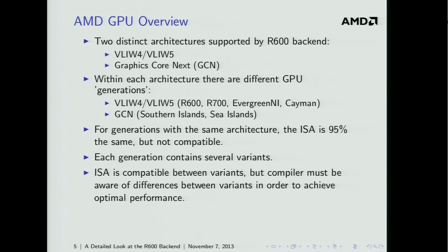There are two different architectures supported by the R600 backend. The first is our older VLIW architecture, and the more recent one is Graphics Core Next (GCN) for Southern Islands GPUs and newer. Within each architecture there are different GPU generations: for VLIW there are four — R600, R700, Evergreen/Northern Islands, and Cayman; for GCN there are two — Southern Islands and Sea Islands. Within the same architecture the ISA is about 95% the same but not compatible between generations, so every new generation requires compiler updates. Within each generation there are variants with compatible ISAs but different resources.